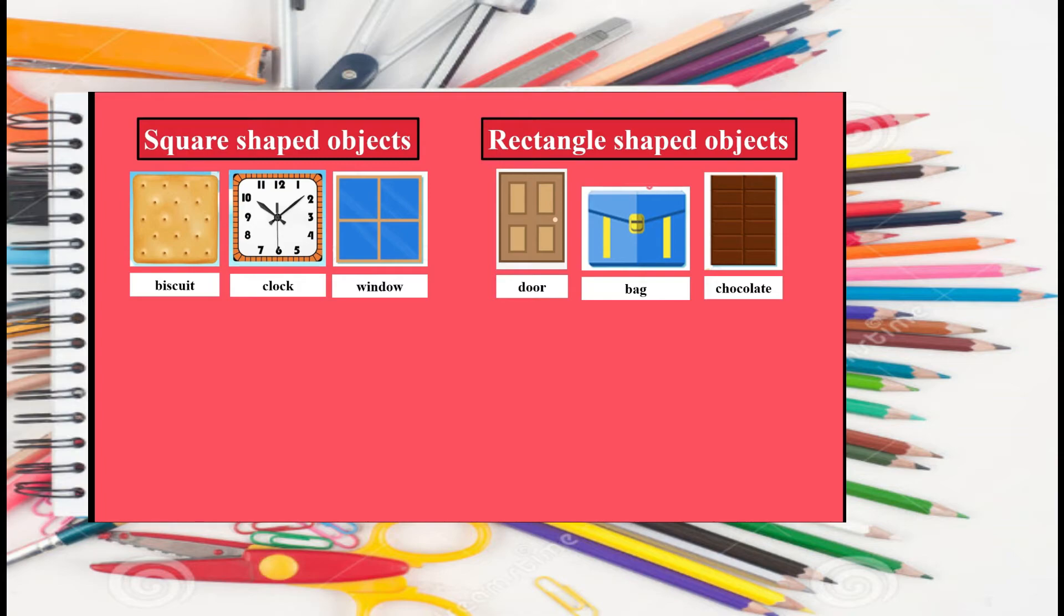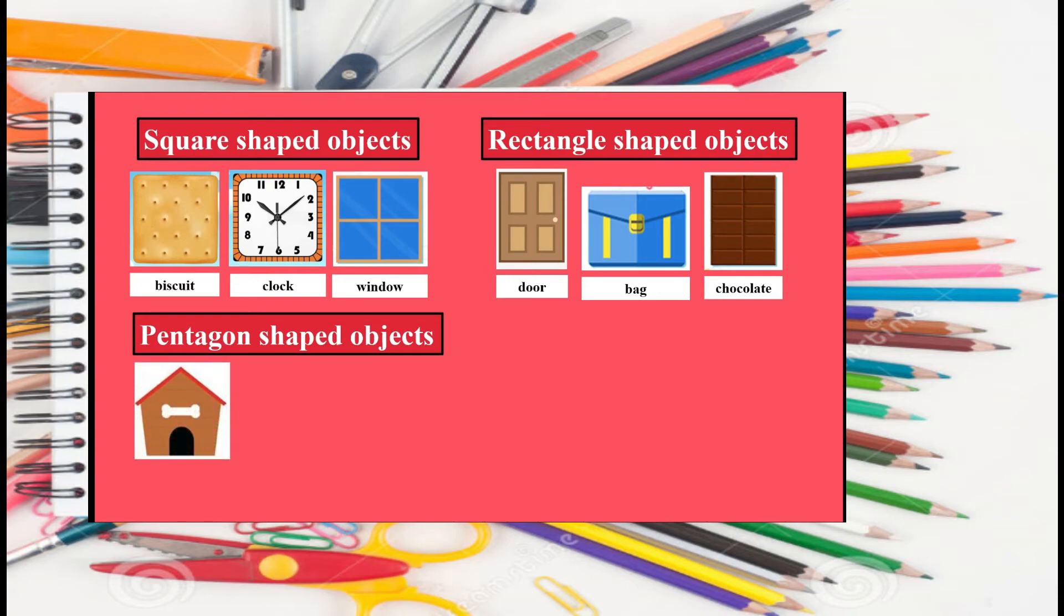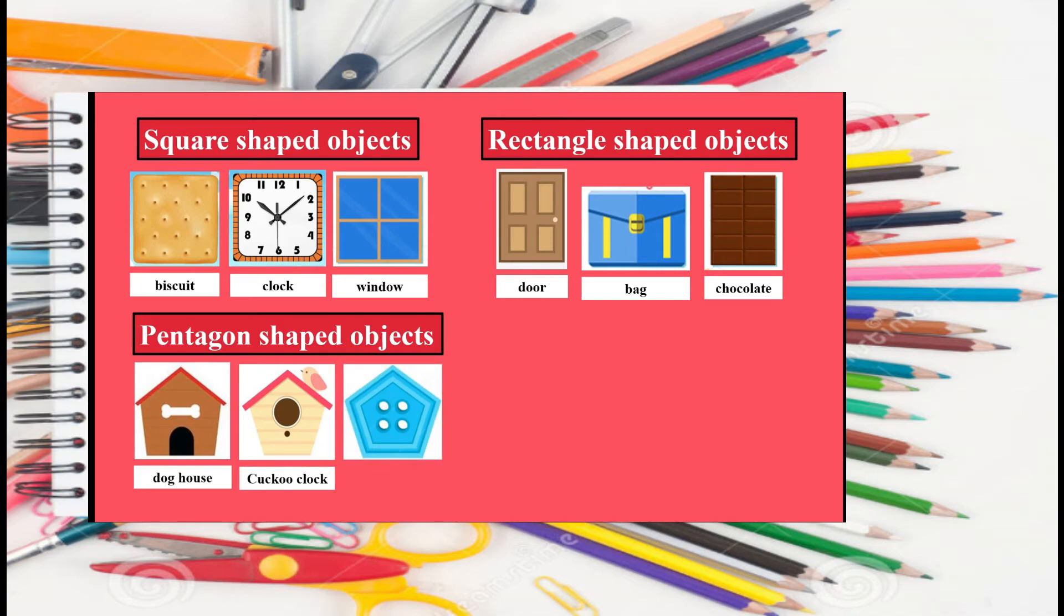Here we have the examples of pentagon shaped things. So, let's see. What's this? It's a dog house. And what's this? It's a cuckoo clock. What's this? Yeah, it's a button.